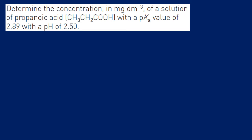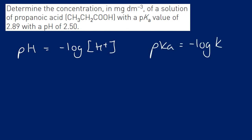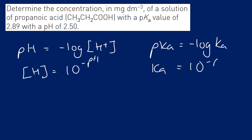pKa: the relationship between pH and H⁺ is pH = −log[H⁺]. It's the same for pKa — pKa = −log(Ka). The reason is that Ka values tend to be very small numbers, and a logarithmic scale is a good way of making very small numbers more manageable. Just as [H⁺] = 10^(−pH), Ka = 10^(−pKa).